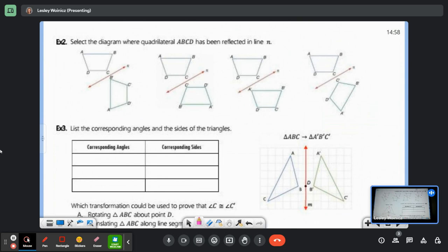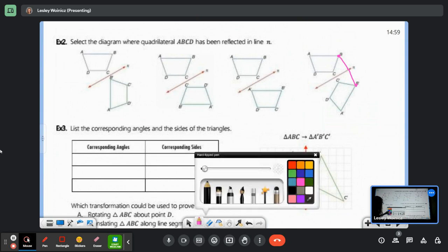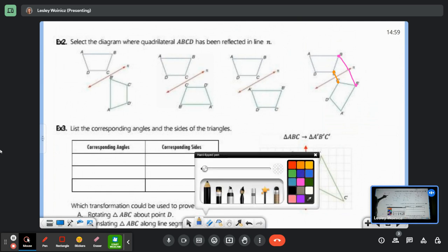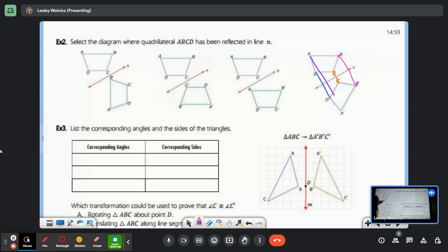We have to select the diagram where quadrilateral ABCD has been reflected in line N. Think about bending your paper on the line. Where would the figure line up exactly? If I'm reflecting, it can't line up like this. All the points have to line up exactly. It is the last one. Notice that B has to be the same distance away as B prime. C has to be the same distance away as C prime. Notice that if I connect each point to its image, they are all perpendicular to the line of reflection. They're all 90 degrees.